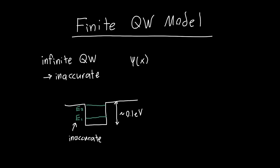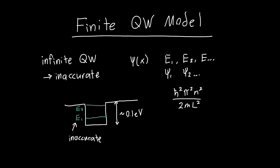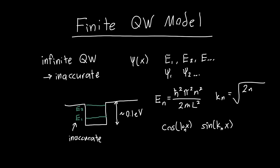The goal is to develop a model that gives us the energy eigenvalues — the energies of the states we're solving for: E1, E2, and so on — and also the wave functions ψ1, ψ2, and so on. For the infinite case, the energies are ℏ²π²n² divided by 2 times the mass inside the well times the length of the well squared, and the wave functions are either cosine(k_n·x) or sine(k_n·x), where k_n = sqrt(2mE_n / ℏ²). We want to do the same for the finite quantum well.